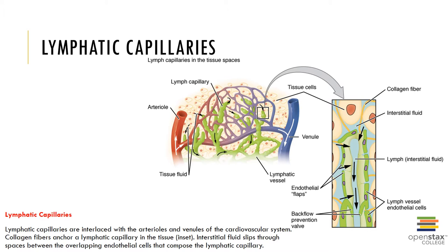Although lymphatic capillaries are lined by simple squamous epithelium, the basal lamina is incomplete or absent. Furthermore, the endothelial cells overlap, forming a type of one-way valve called the mini valve. The mini valve permits the entry of fluids and solutes like proteins, as well as viruses, bacteria, and cell debris, but prevents their return to the intercellular spaces.